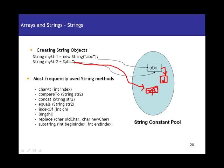Whenever you use strings, it is advisable not to use the new keyword, because you unnecessarily create a new object on the heap. Here is a list of the most frequently used string methods: charAt gives the character at a specified index, where the index starts from zero. compareTo compares one string with another. concat joins two strings. equals checks whether two strings are equal. indexOf returns the index of a particular character. length gives the length of the string. replace replaces characters. substring gives you a substring from a specified beginning index.